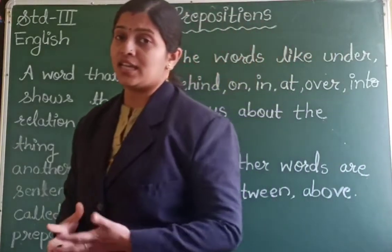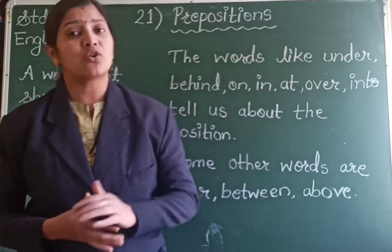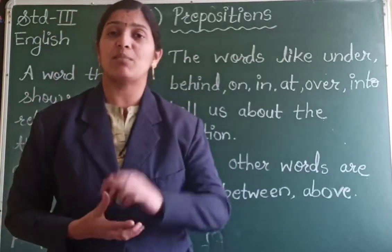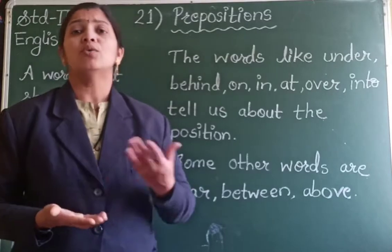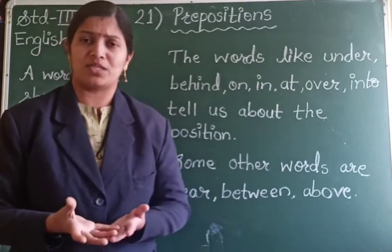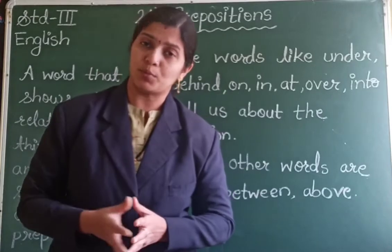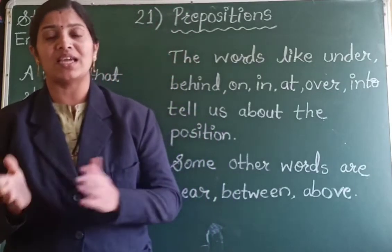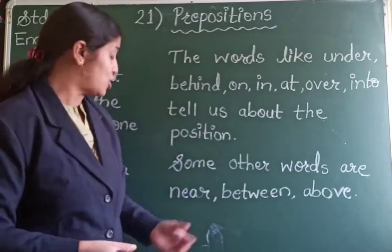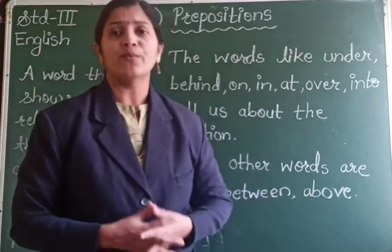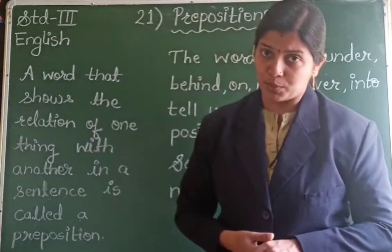The words like in, on, under, above, into — these words are called prepositions. These prepositions tell us about the position of some object, maybe the position of some animal, position of some bird, position of a person or position of any object. The words which tell us about the position of one thing or another, and also show the relation between one thing and another in the same sentence, are called prepositions. Other prepositions include near, between, above, over, under.